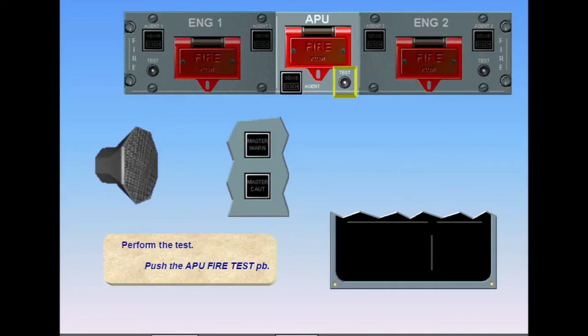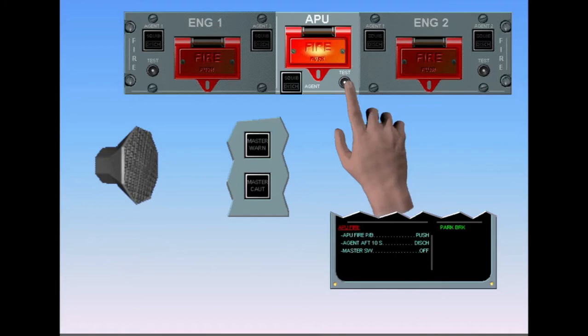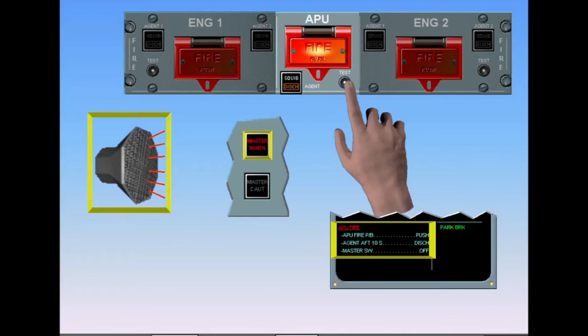Perform the test. Push the APU Fire Test Push Button. The APU Fire Switch illuminates red, and the squib and discharge lights illuminate. If AC power is available, the master warning lights and an APU Fire Warning on the ECAM are illuminated and the continuous repetitive chime, CRC, sounds.